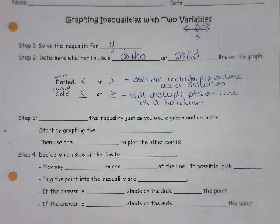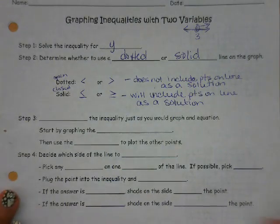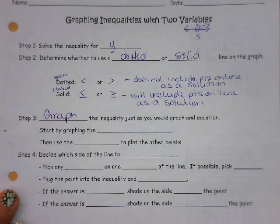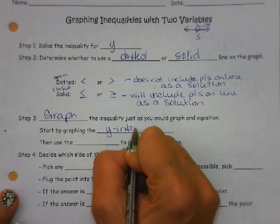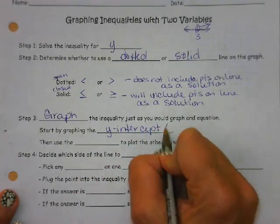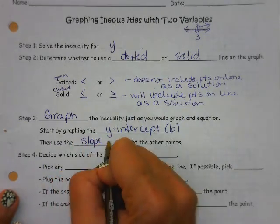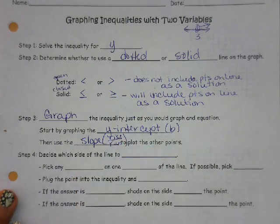So next, we're going to graph our inequality just like we would an equation. We're going to start by graphing the y-intercept, a.k.a. the b, and then use the slope, a.k.a. rise over run, to plot the other point. That is the same, just like when we're solving.